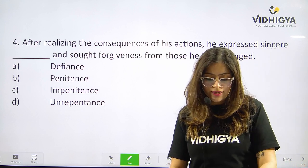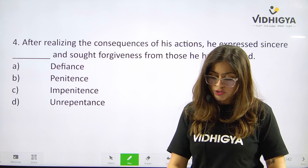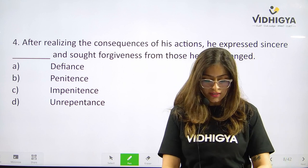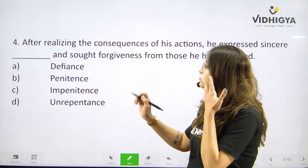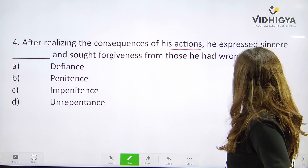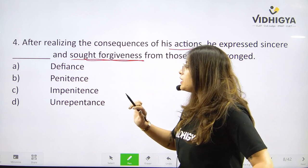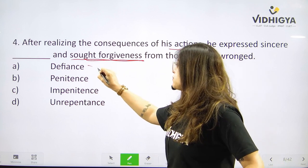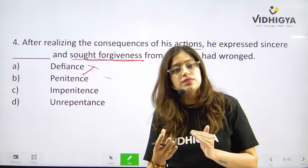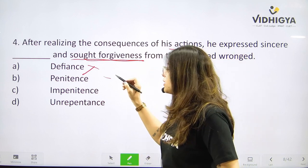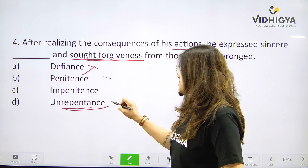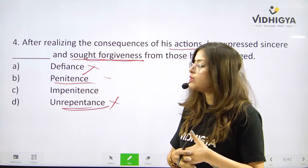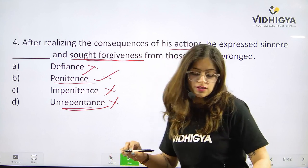Question number four. After realizing the consequences of his actions, he expressed sincere ___ and sought forgiveness. We need a term which shows that he was repenting and seeking forgiveness. Defiance is incorrect — that would be going against whatever he said and not feeling sorry. Unrepentance means not feeling repentance — also incorrect. Penitence means a deep feeling of regret or sorrow, feeling sorry. So impenitence is clearly opposite. Correct answer is B. Penitence.